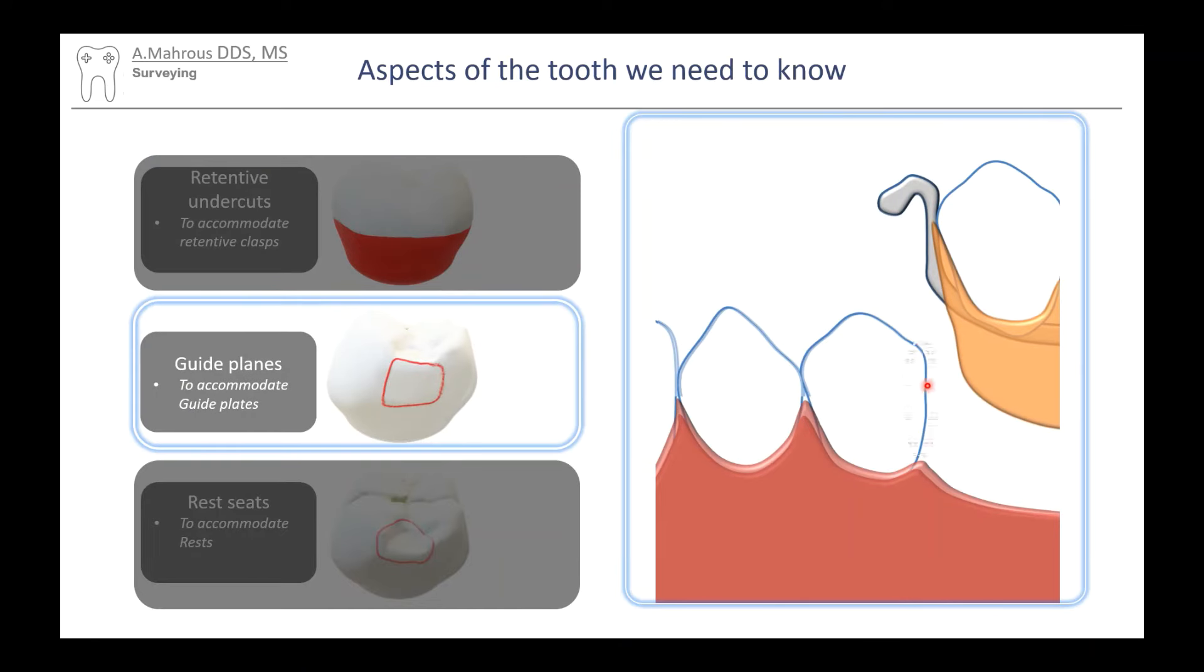Guide planes are flat areas on the surface of the abutment teeth that is next to the edentulous space. Along with the guide plate that is on the partial, they provide guidance to the insertion and removal of a partial denture.